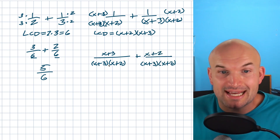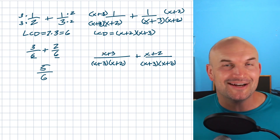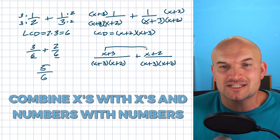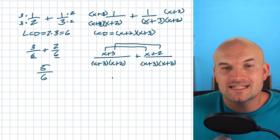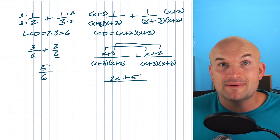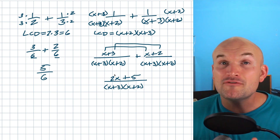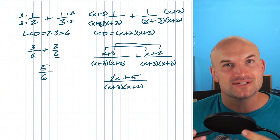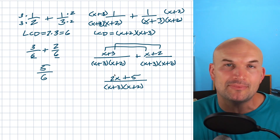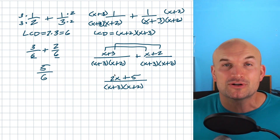Now since the denominators are exactly the same, I'm just going to combine my numerators. Since we're dealing with variables, we combine X's with X's and numbers with numbers. So X plus X is going to be 2X and three plus two is going to be five, all over our common denominator. So the final answer is 2X plus five all over X plus three times X plus two. Unfortunately, multiplying the two denominators is not the only way to find the LCD — it just gives you a common denominator. In these two examples it did give the least common denominator, but let's look at examples where it does not.